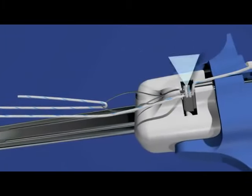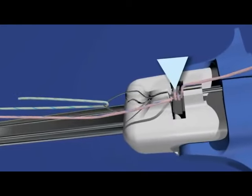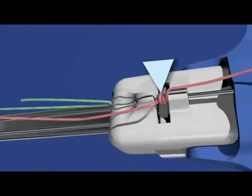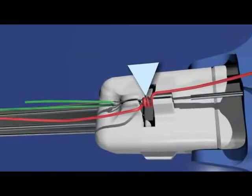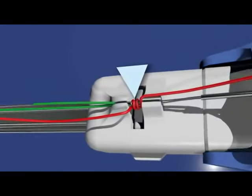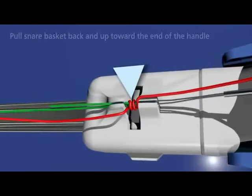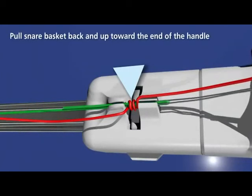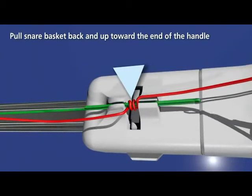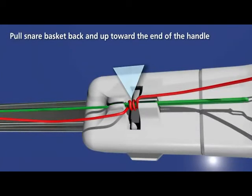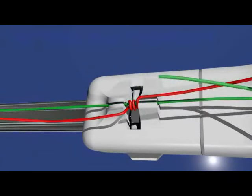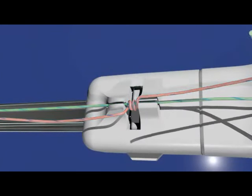Place your free hand thumb over the top of the pre-tied knot, holding it in place. Pull the snare basket back and up towards the end of the handle to thread the suture through the pre-tied knot.